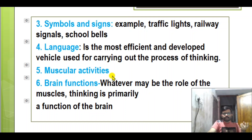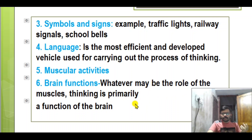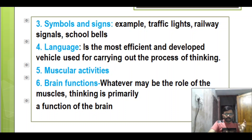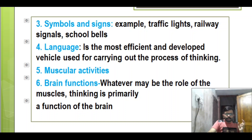Muscular activities are also involved in the thinking process — there is muscle involvement alongside brain functions. Whatever may be the role of the muscles, thinking is primarily a function of the brain. The cerebrum is the largest part and is the center of thinking. So the elements are: images, concepts, symbols and signs, language, muscular activities, and brain functions.